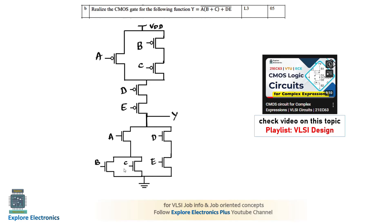A is in series with the parallel combination of B and C. For A·(B + C) + D, we connect two series transistors in parallel with gate input D. Write the pull-down network first, then derive the pull-up network by converting series connections to parallel and parallel to series. This gives output Y = (A·(B + C) + D)̄. A video with many complex circuits is available if you need further guidance.